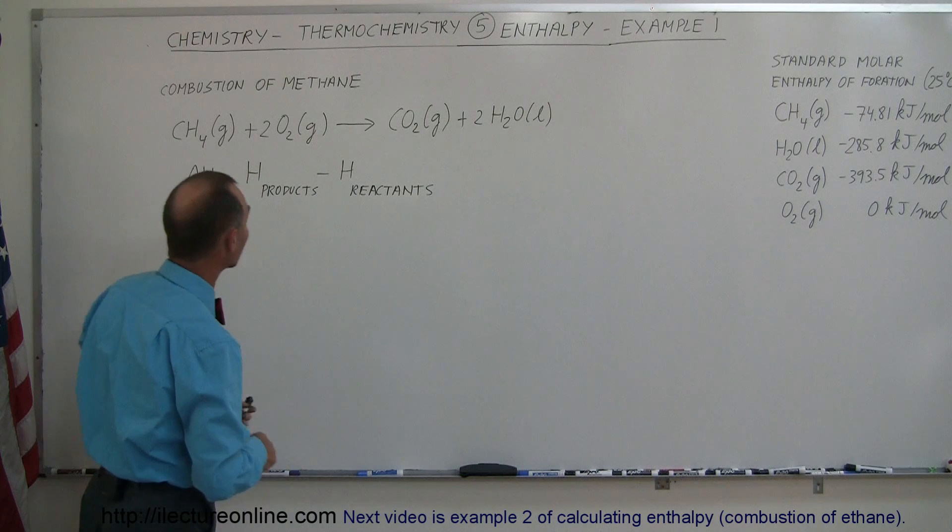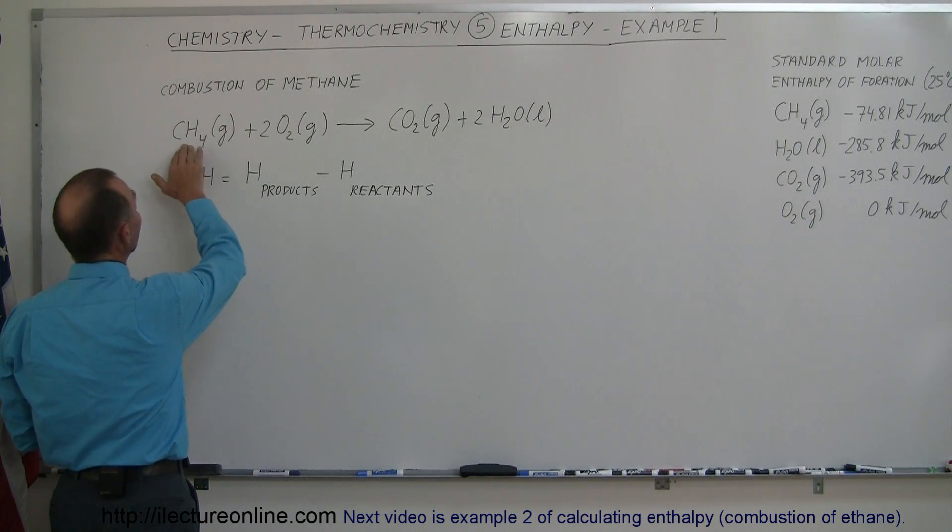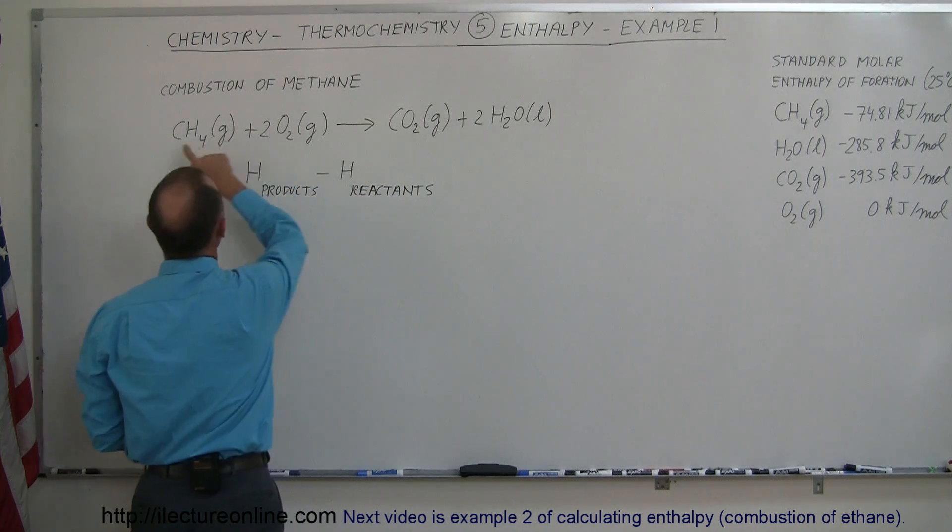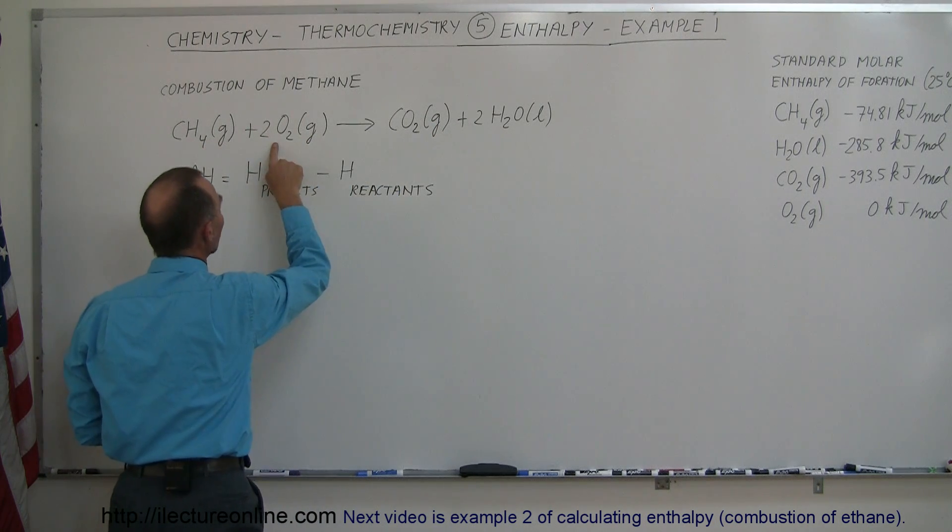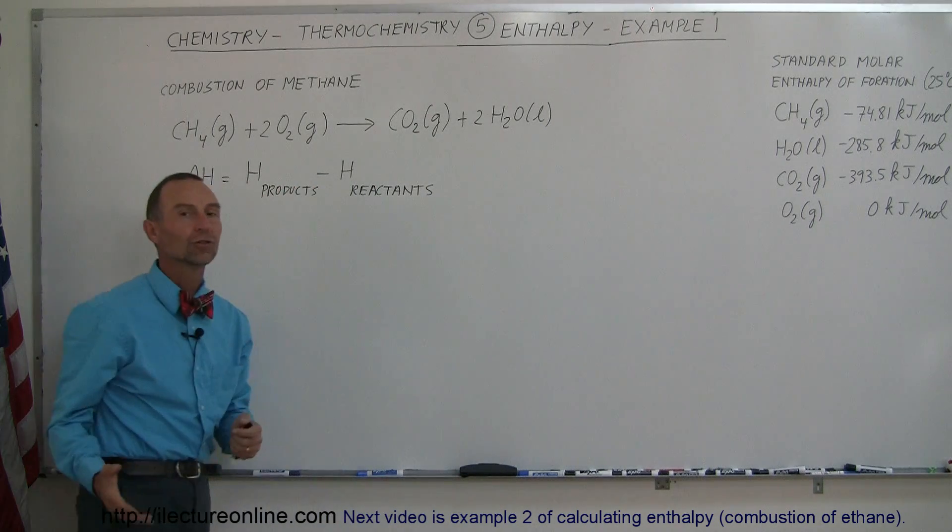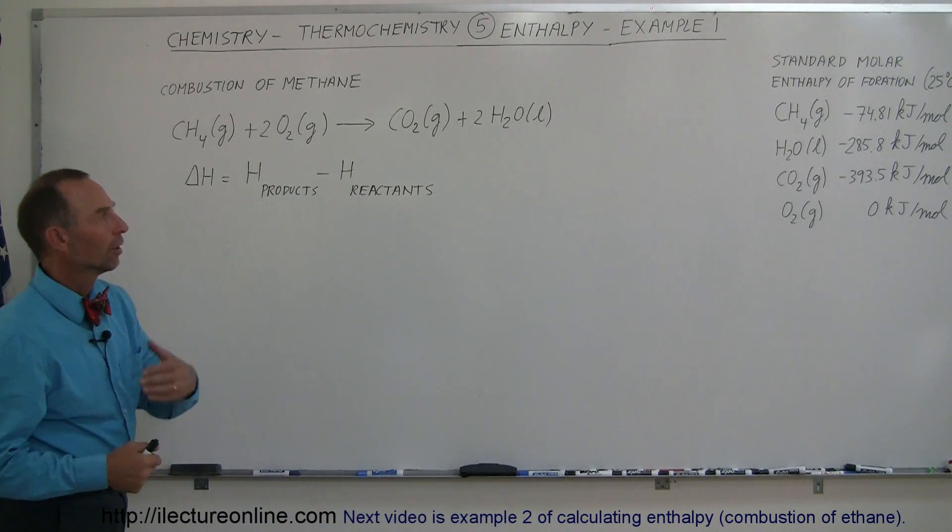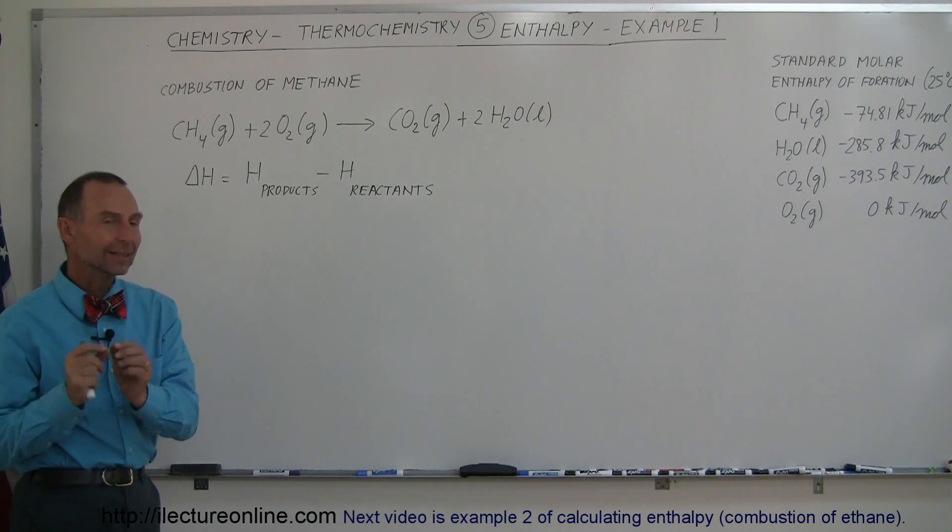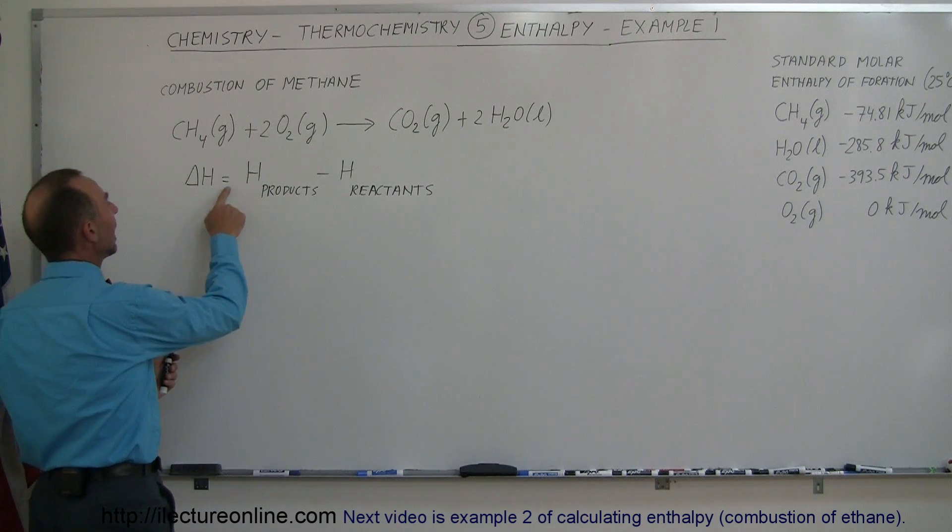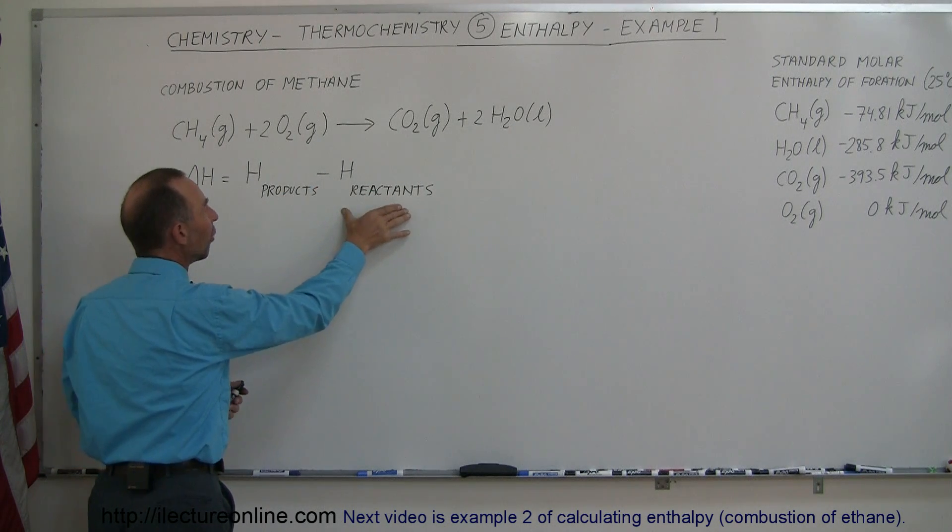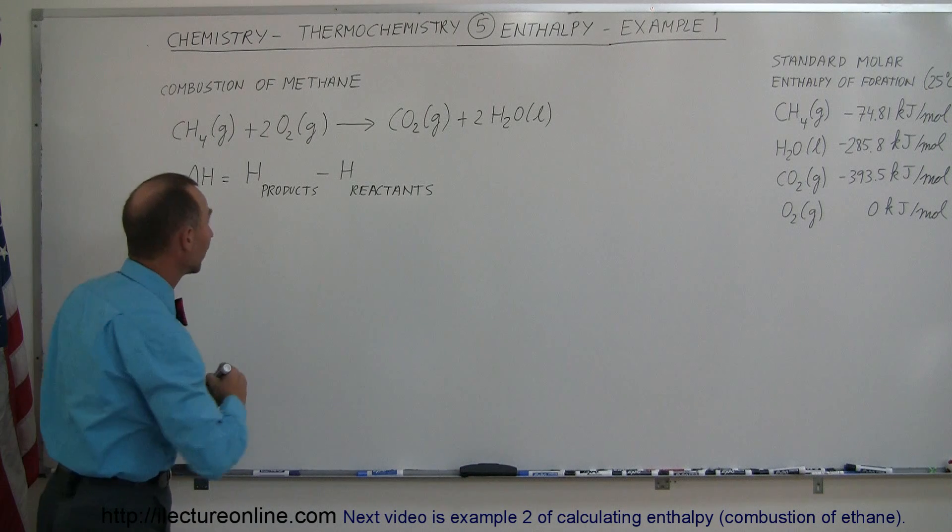Now let's look at the reaction. So methane plus oxygen gives us carbon dioxide and water. Notice we have one mole of methane, two moles of oxygen gas, one mole of carbon dioxide, and two moles of water, liquid water. And so to calculate the change in enthalpy, we add up the enthalpy of all the products and subtract from them the enthalpies of all the reactants. So let's go ahead and do that.